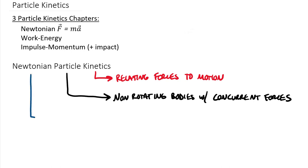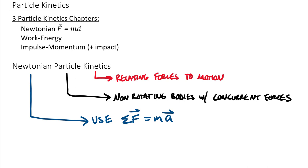Newtonian refers to Sir Isaac Newton and his second law. In his second law, the sum of all force vectors is equal to the mass scalar times the acceleration vector. Essentially, we're using this acceleration-based equation versus work-energy or impulse-momentum.